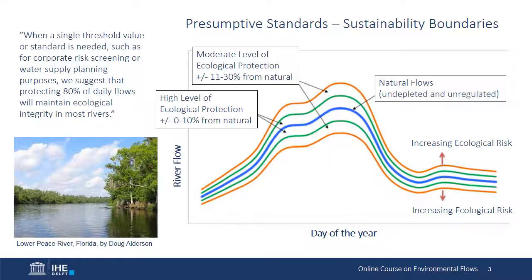Based on the review of case studies from three US states and the EU, Richter and his colleagues proposed that for a high level of ecological protection, alteration of natural flows be limited to a 10% departure from natural. And for a moderate level of ecological protection, alteration be limited to a 20% departure from natural.